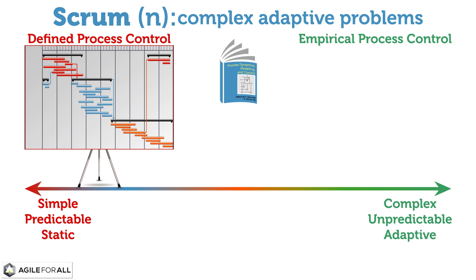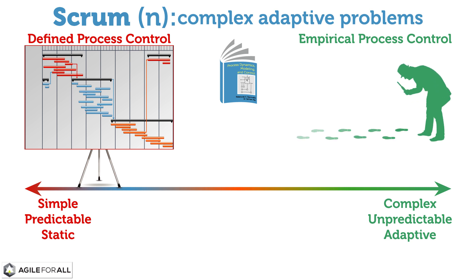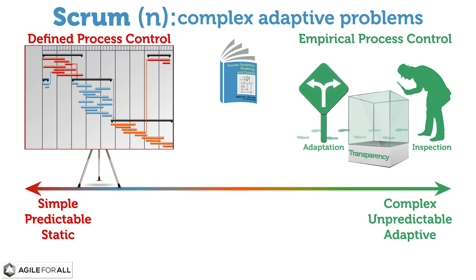An empirical approach is one that is based on observations and evidence. Empiricism is the central idea behind the scientific method — that we can find out what is true through experiments with concrete, observable results. In order to make good observations, an empirical process has three pillars: transparency, inspection, and adaptation.